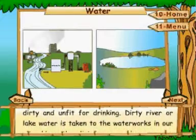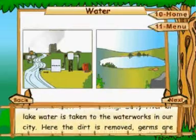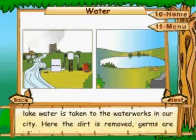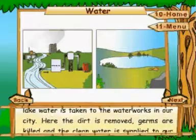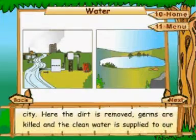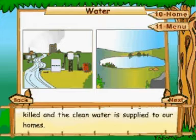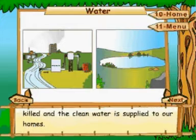Dirty river or lake water is taken to the waterworks in our city. Here, the dirt is removed, germs are killed and the clean water is supplied to our homes.